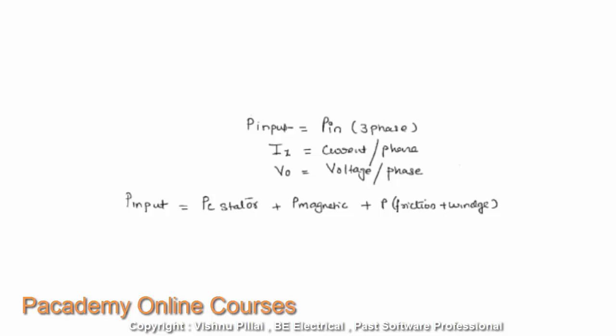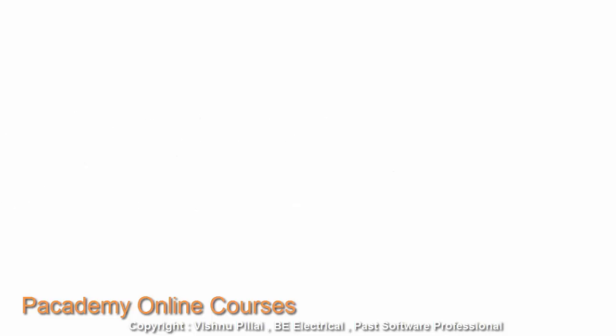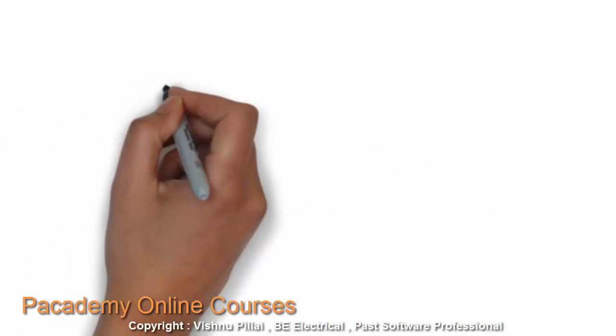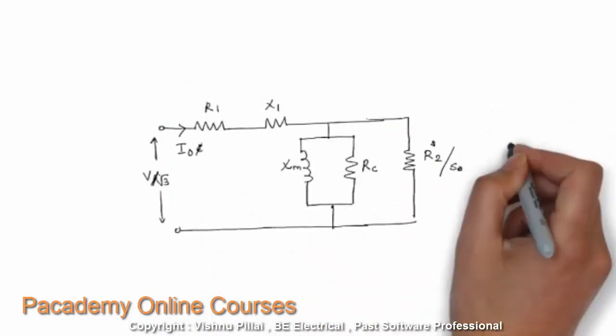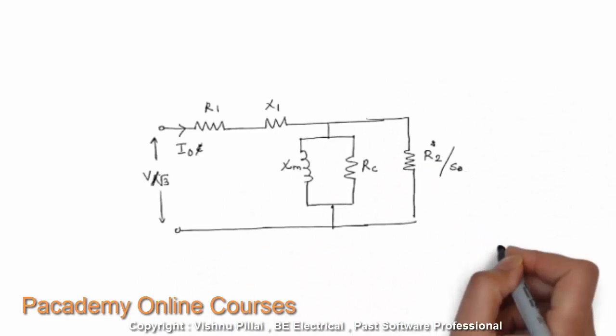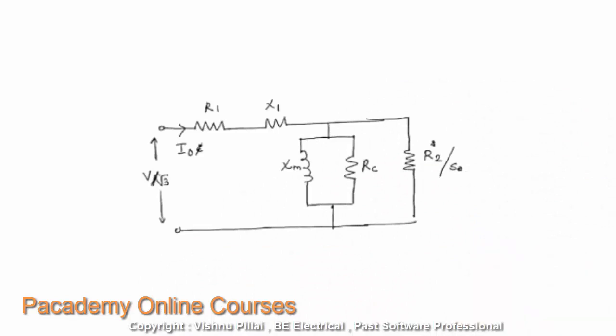When the machine is running on no load, the input power measured by the wattmeter is equal to the static core losses plus copper losses plus magnetic losses plus friction losses in the machine. Those are the three categories of losses that define the power measured during this test.